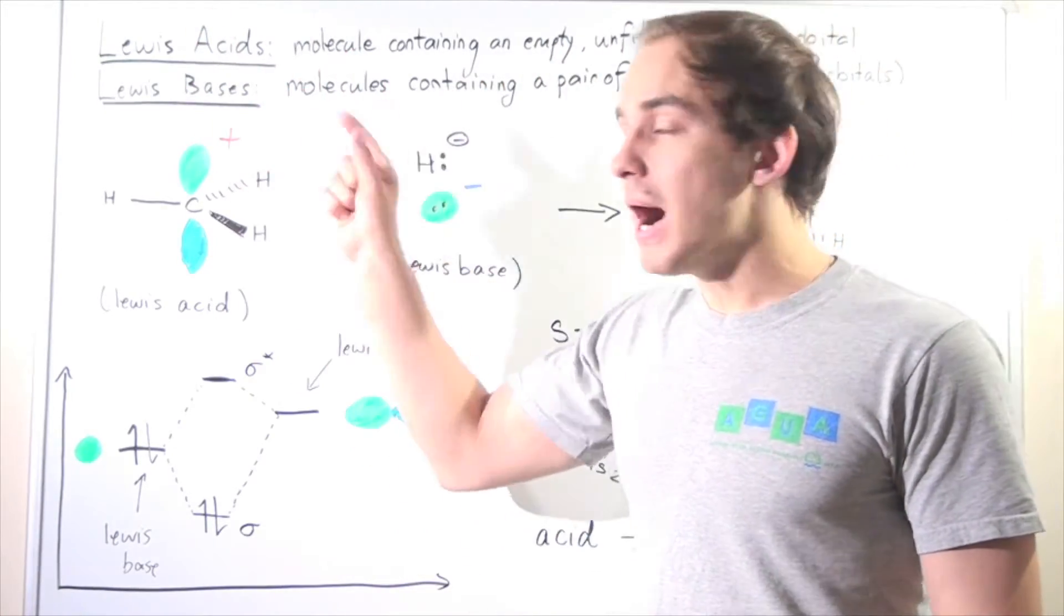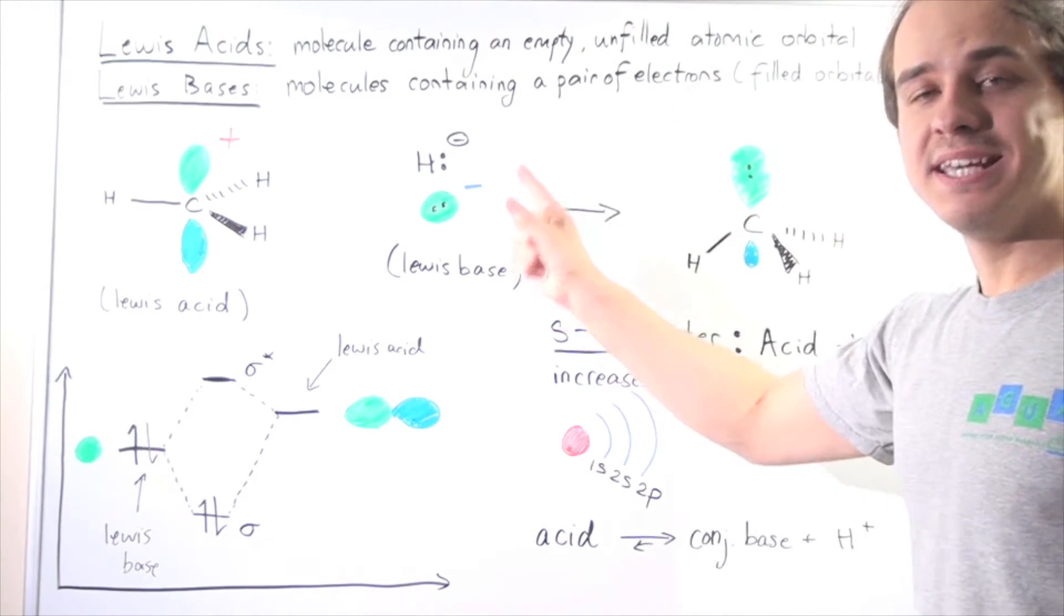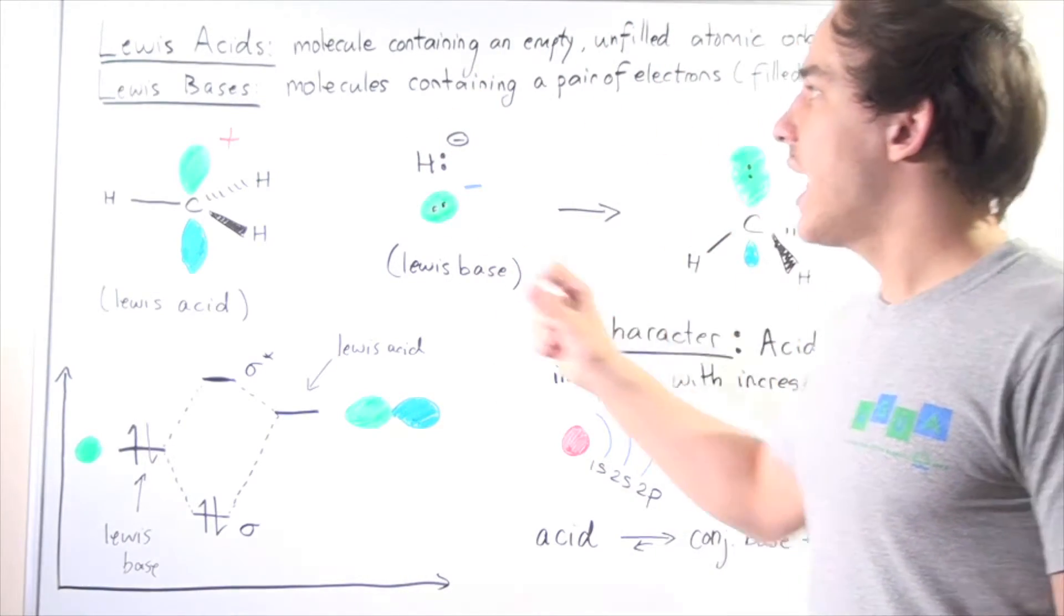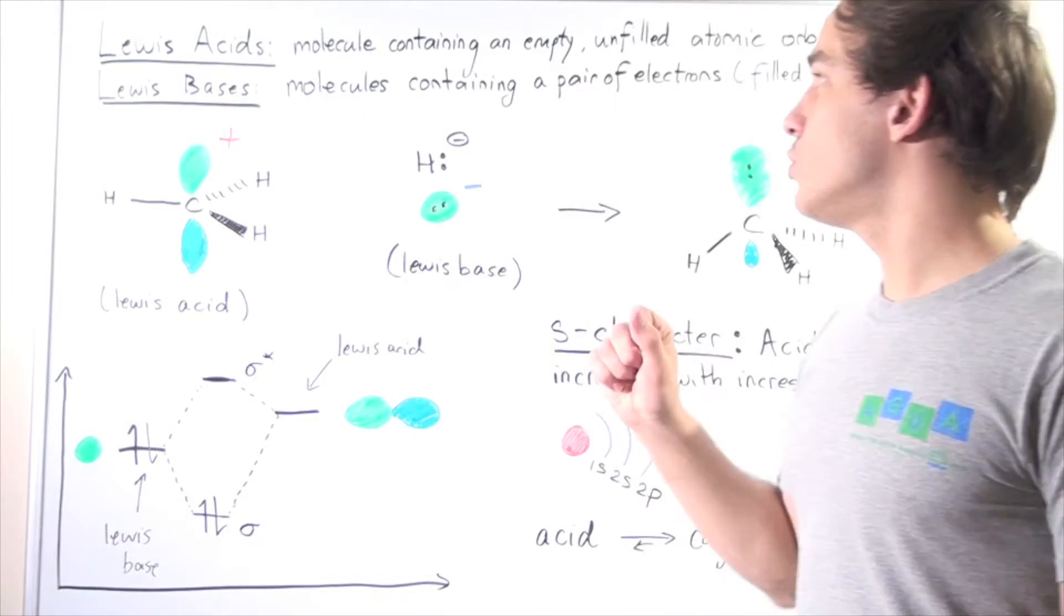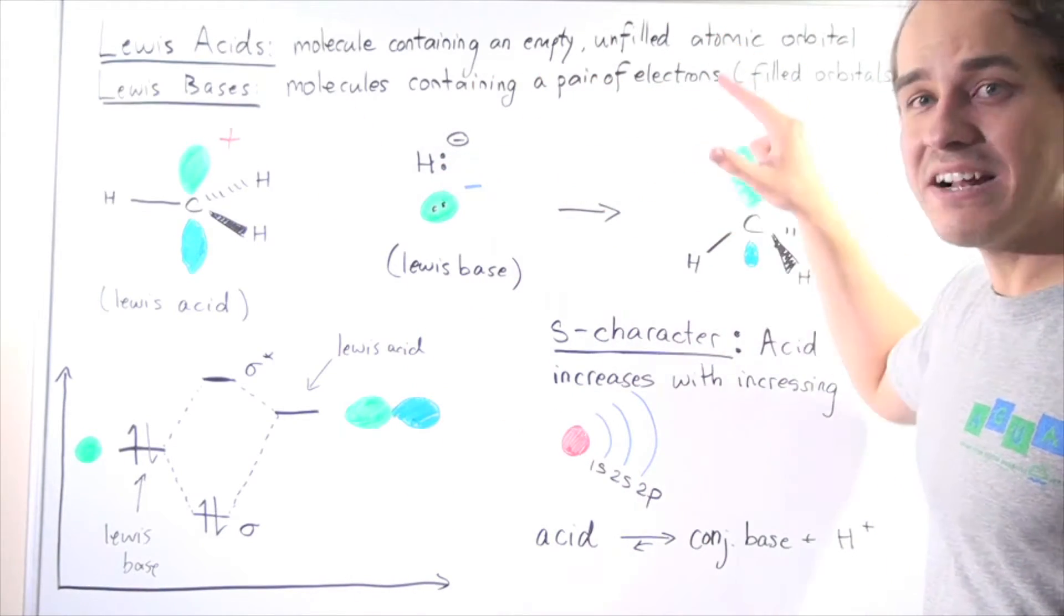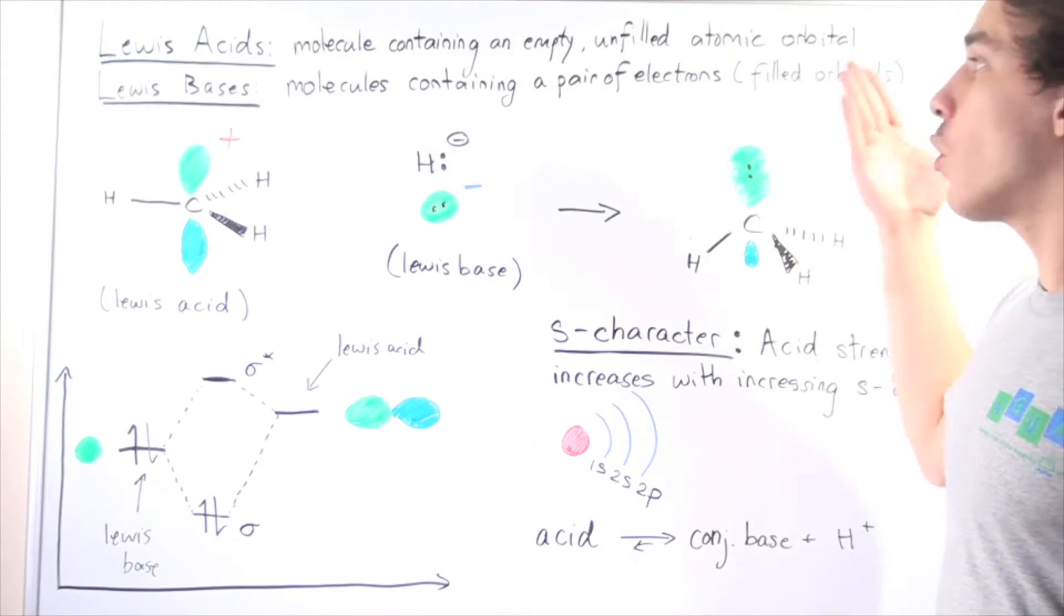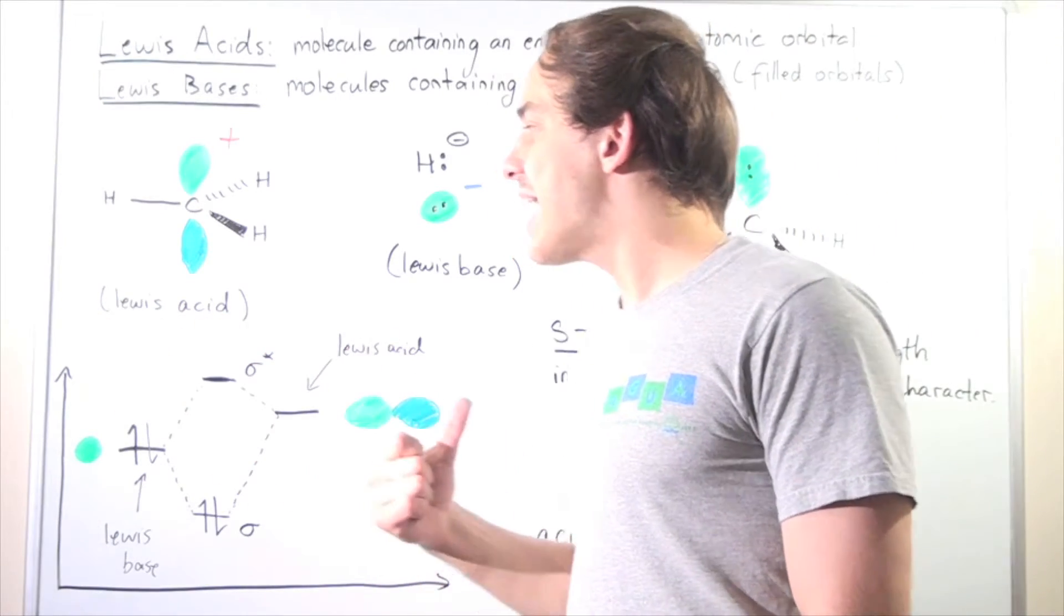Lewis acids are molecules containing an empty, unfilled atomic orbital. And Lewis bases are molecules containing a pair of electrons or a filled orbital.